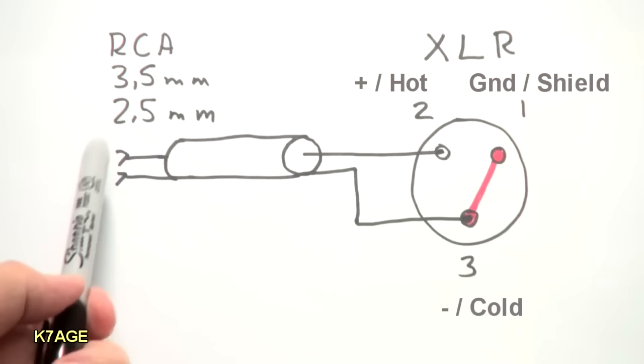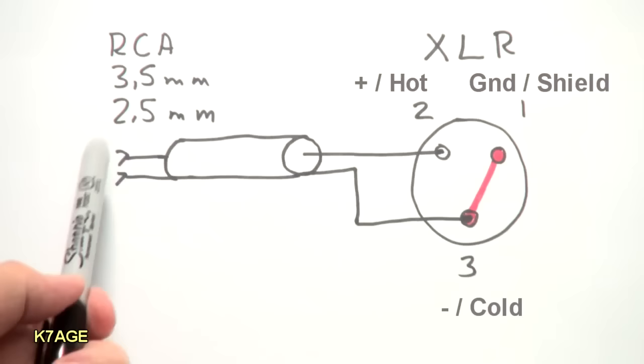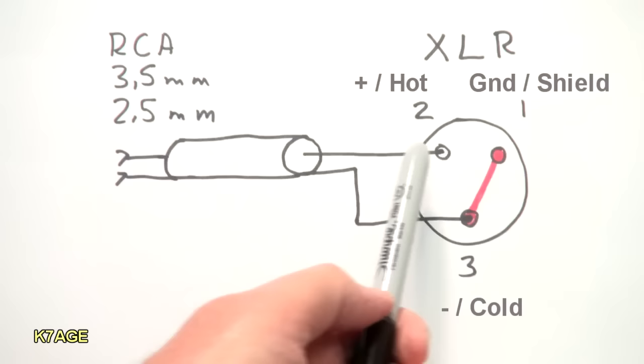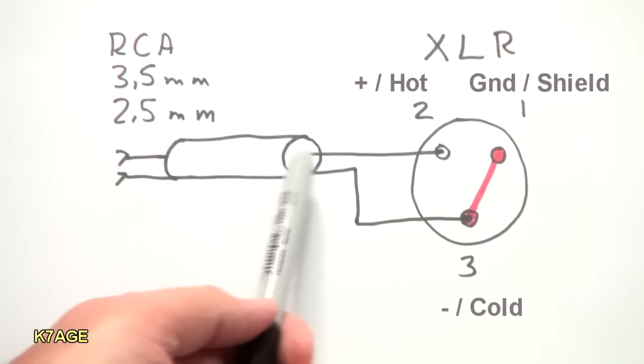So the wire into the mixer will be using unbalanced sources to a balanced input on the mixer. So we'll take the hot lead of the unbalanced wire. It'll connect to pin 2 on the XLR. This is the hot or the plus terminal. The shield will connect to pin 3, which is the ground or shield, and also to the minus or the cold side.